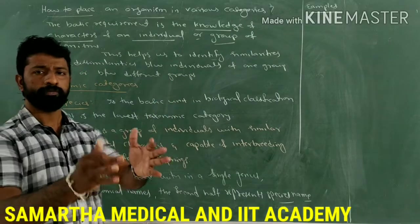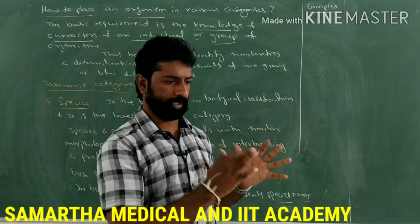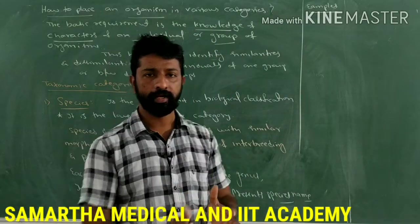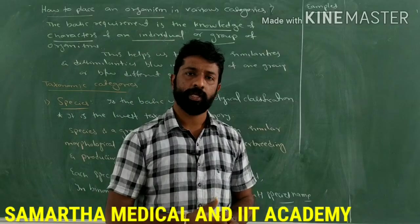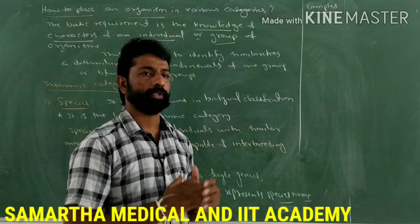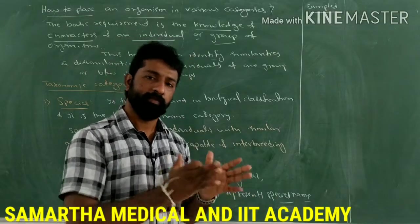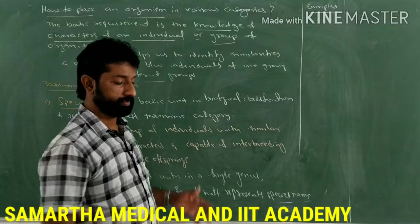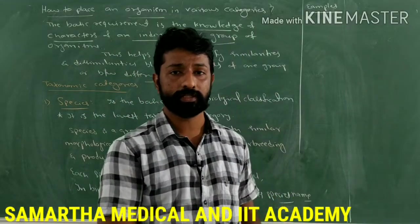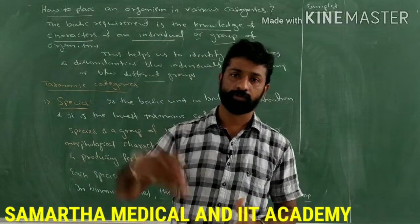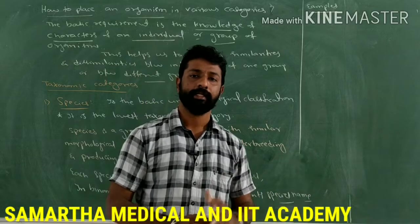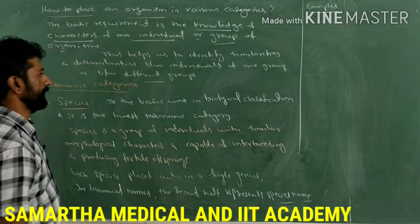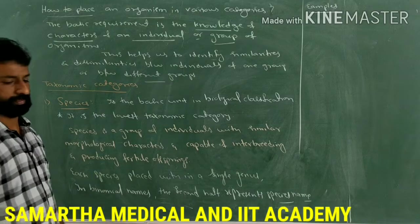If you have knowledge of the basic characters of a particular organism or individuals in a group, it will help you to identify what similarities exist between organisms of the same group, what dissimilarities they have within the group, and what similarities or dissimilarities exist between individuals of different groups. These similarities and dissimilarities help us identify to which category an organism belongs and where to place it in the taxonomical hierarchy.